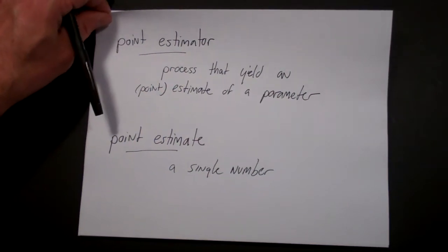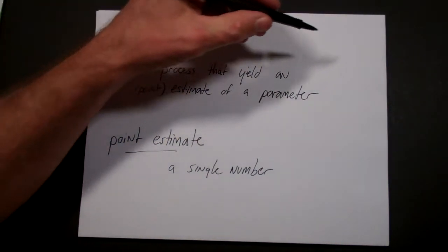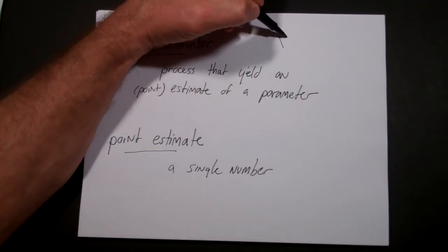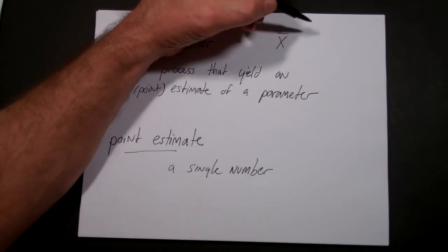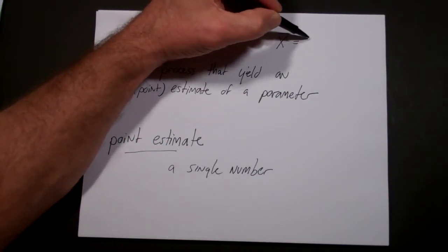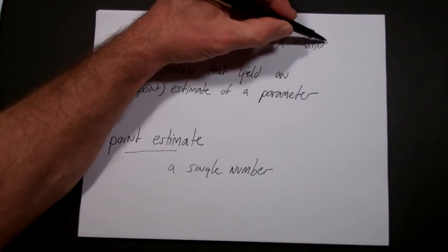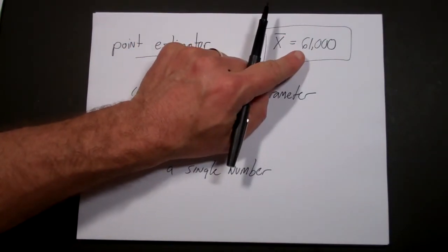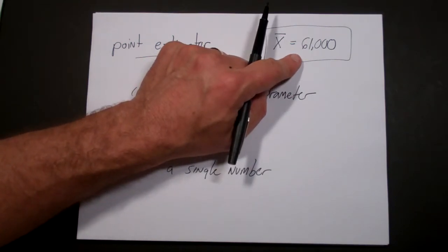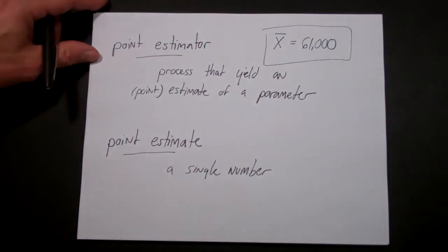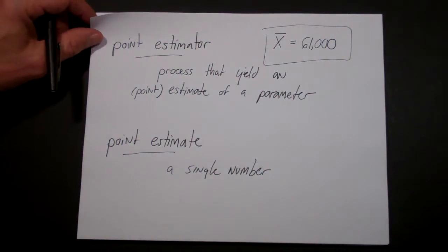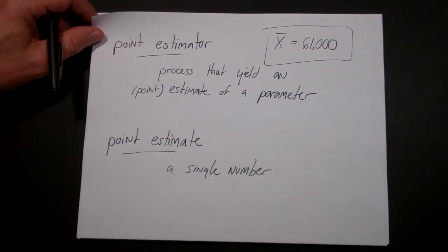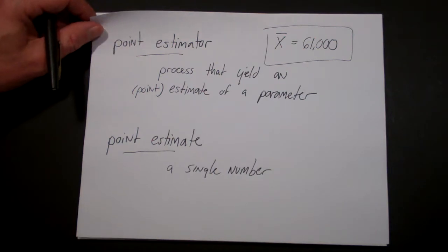That's not always that useful. For example, let's say you were estimating the average income of an accountant with a four-year college degree and you used X-bar and got $61,000 a year. It's unlikely that this number is exactly right. So rather than a single estimate of what you think the answer might be, what you might want is a range of numbers of which you were fairly confident that the true value fell within. Then you get what's called a confidence interval.